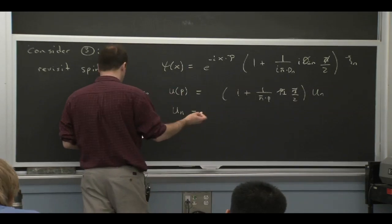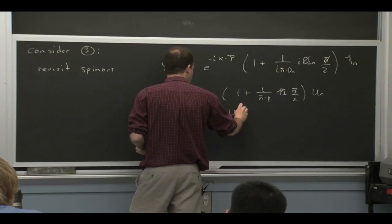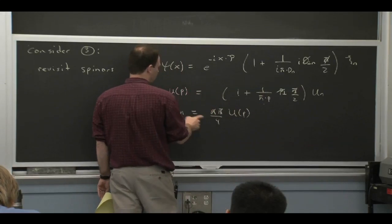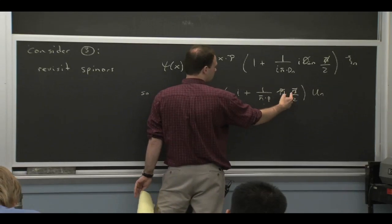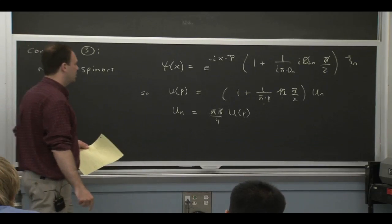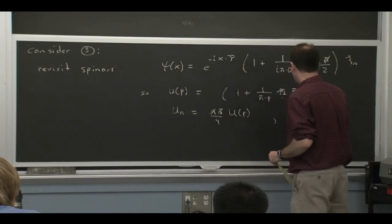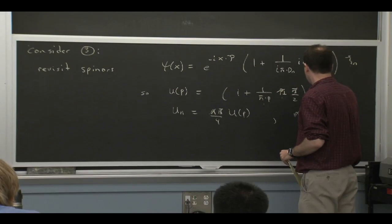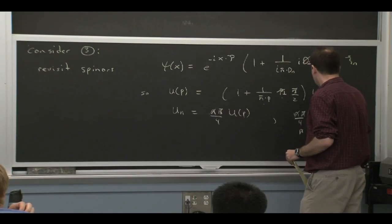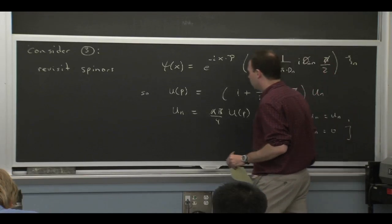Then if you take this formula, you also see that if I hit it with a projector, n slash n bar slash over 4, if I hit the u with a projector, it's going to kill this piece, because the n slash n bar slash can be pushed through the p perp slash, and then n bar squared is 0. So that kills that second piece. So we also have this formula.